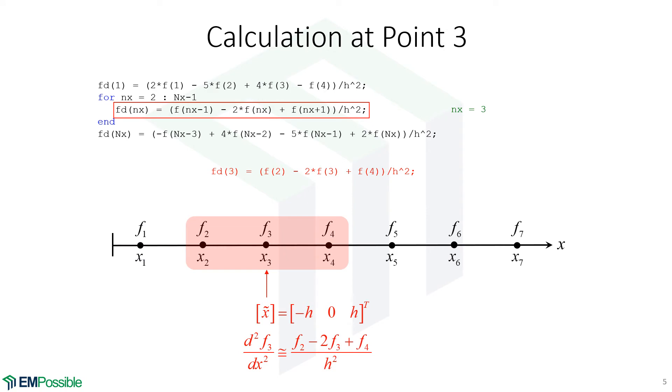Now the next iteration, little nx is three, and that window moves over. We're now looking at F2, F3, and F4 to calculate the second order derivative at F3. And the loop keeps going. Now little nx is four, and we're using F3, F4, and F5 to calculate the second order derivative at X4. Now little nx is five, and we're using F4, F5, and F6 to calculate the second order derivative at X5.